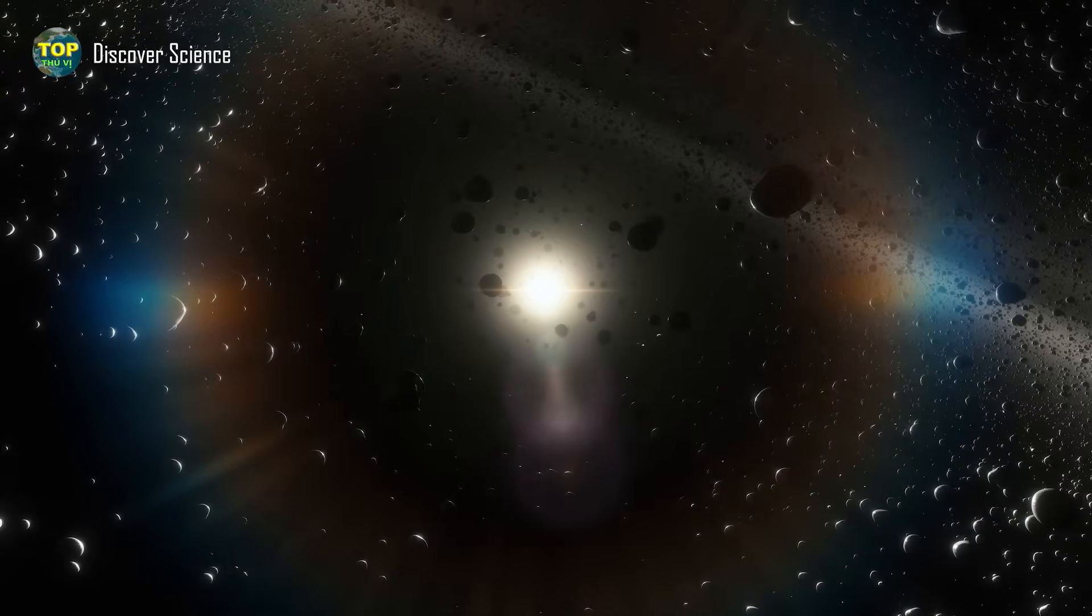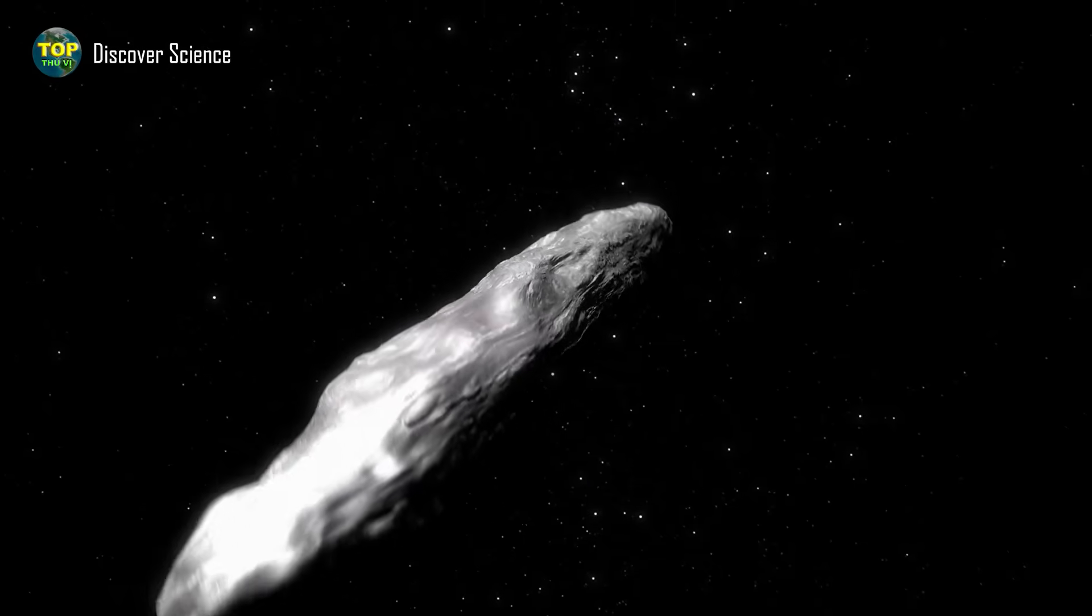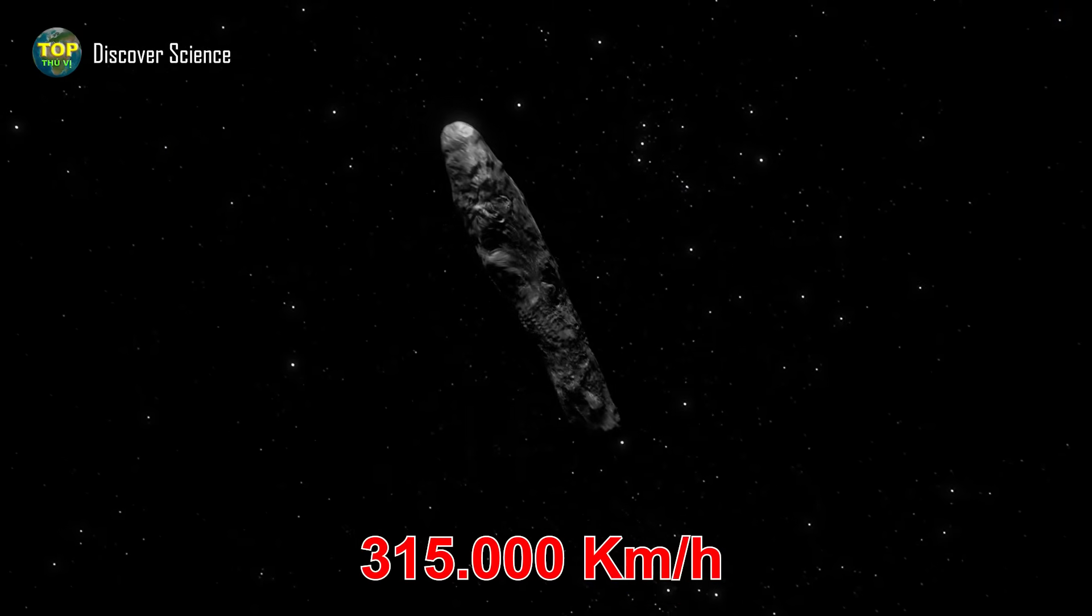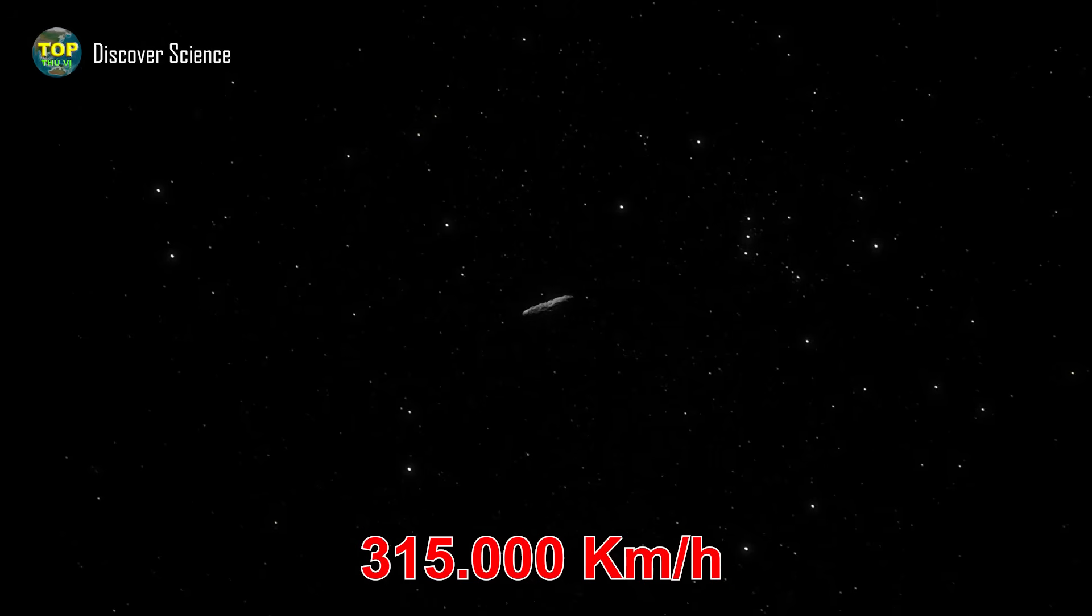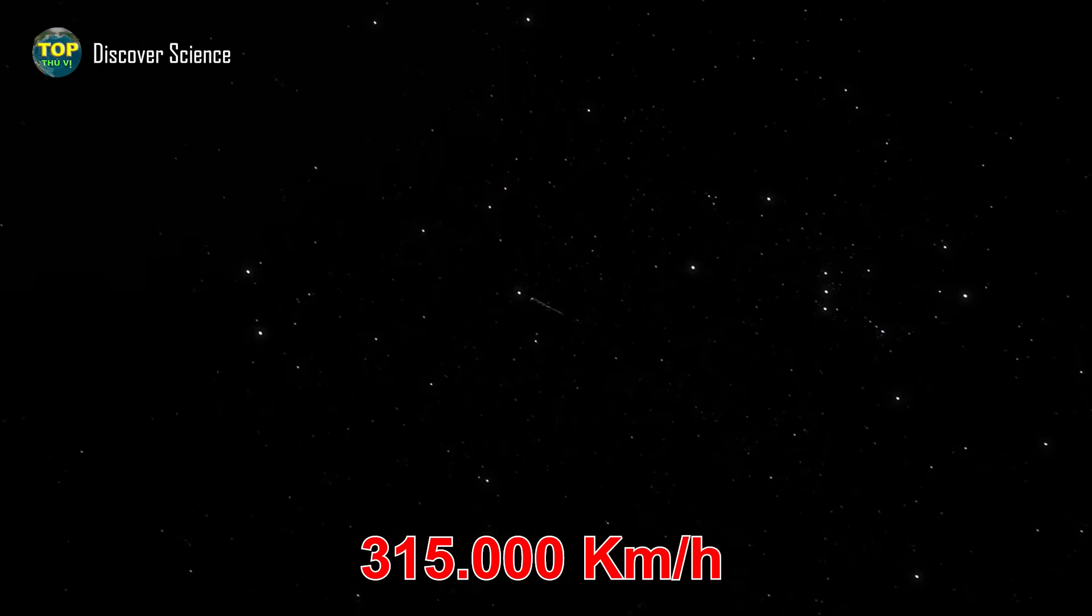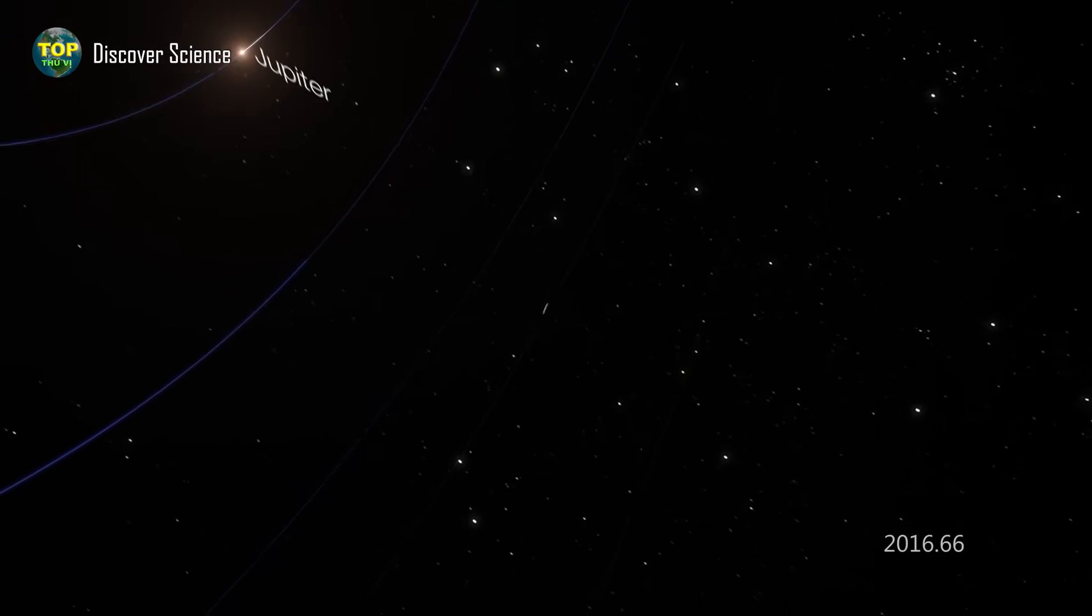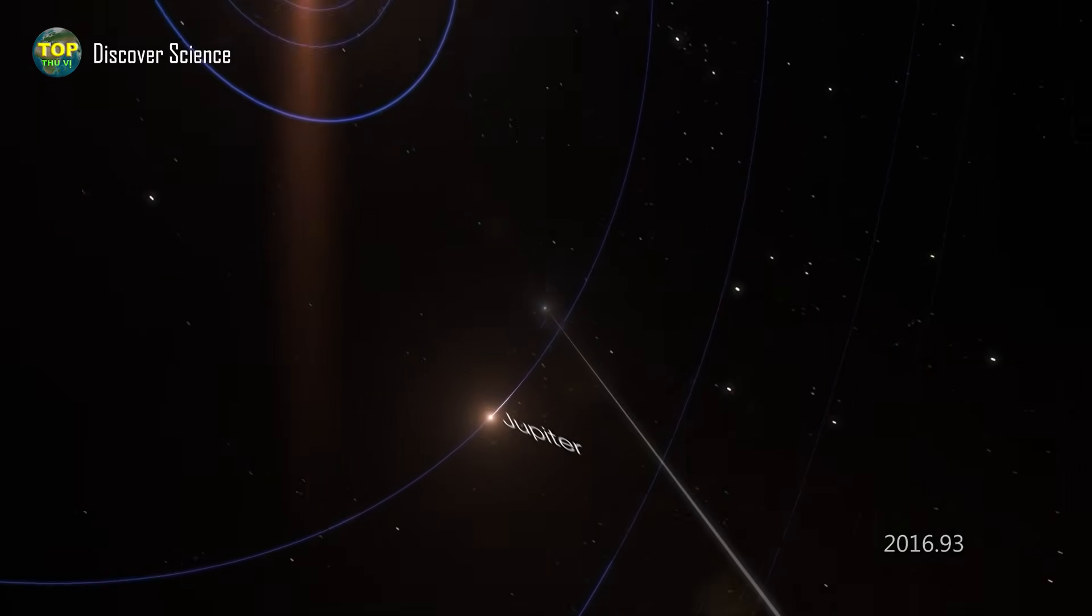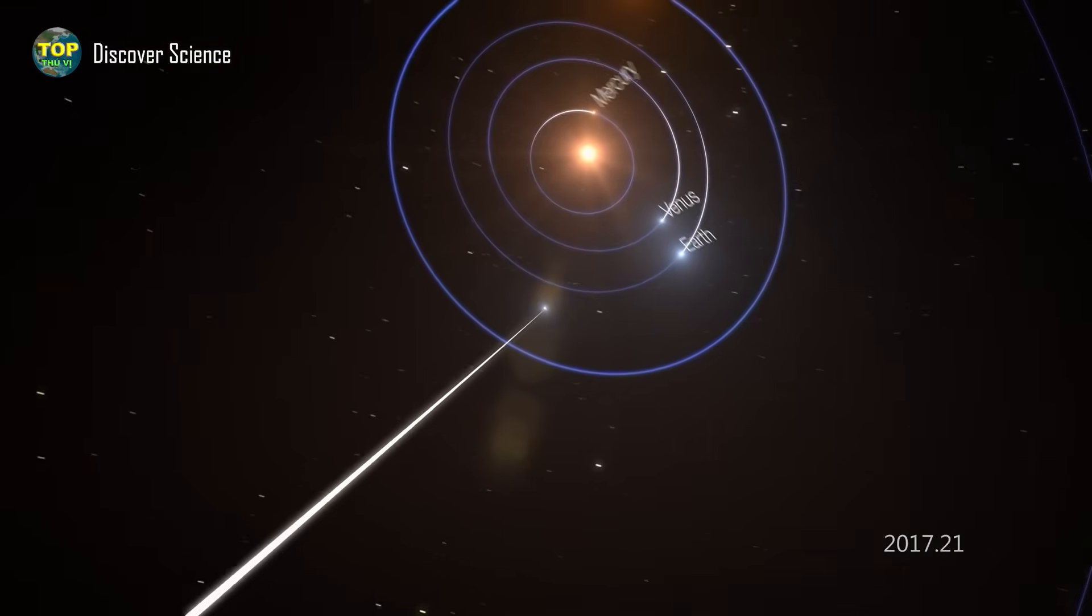On top of that, it was moving at an incredible speed—around 315,000 kilometers per hour—far too fast to be in orbit around the sun. Once again, this raised serious questions about its true nature. An object moving at such a high speed would follow a trajectory that takes it out of our solar system, and that means it must have come from another star—a new type of object we had never known before: an interstellar object.